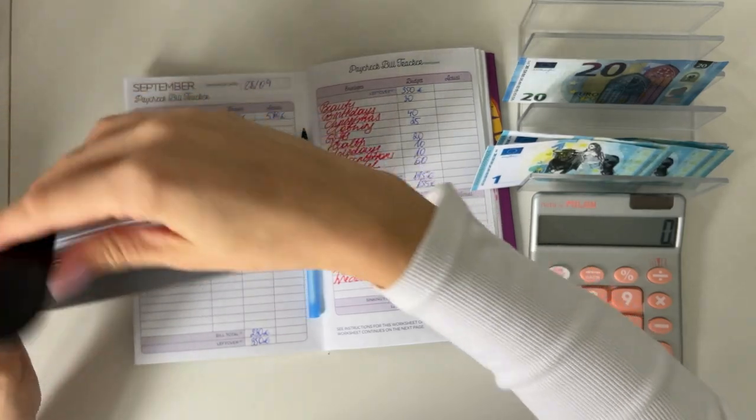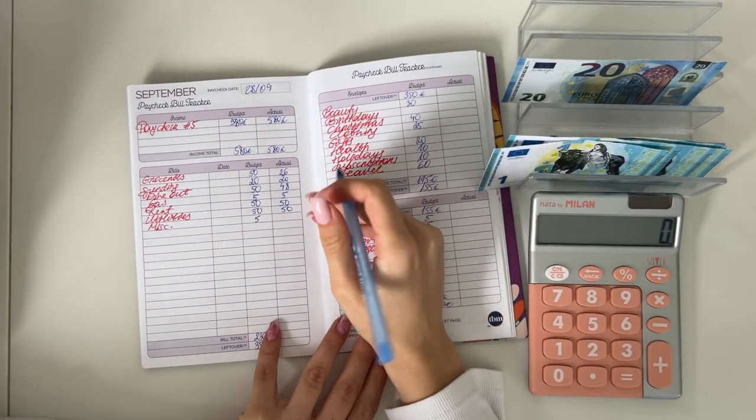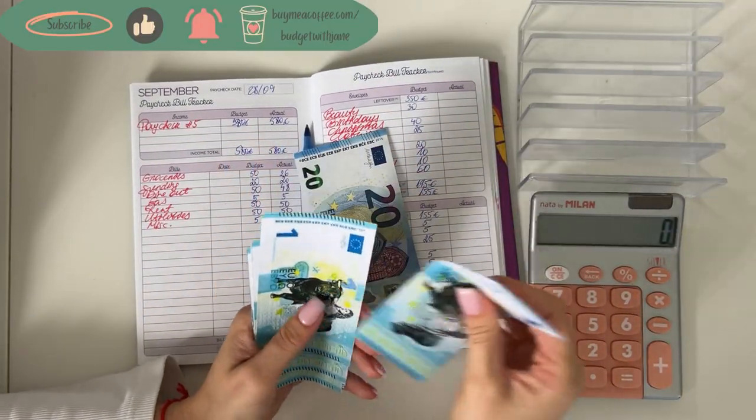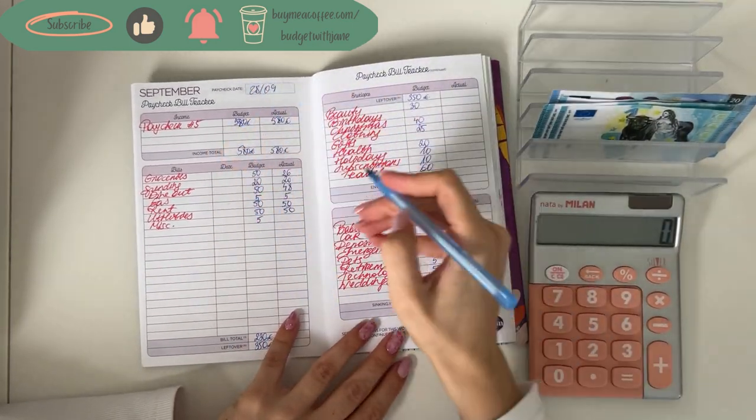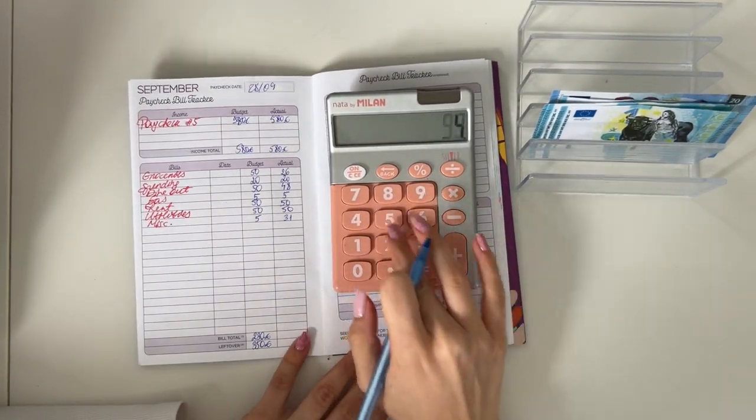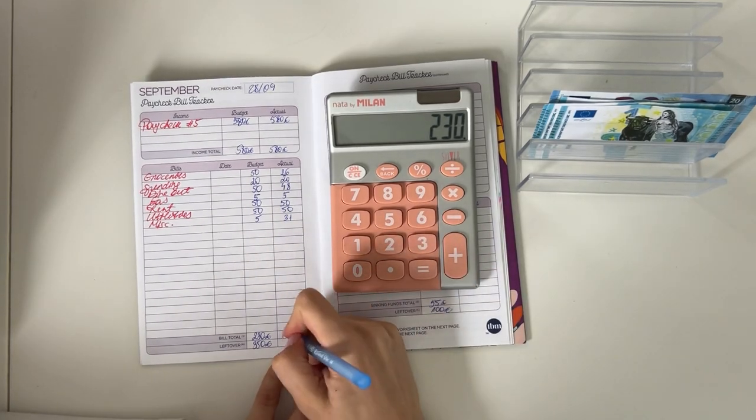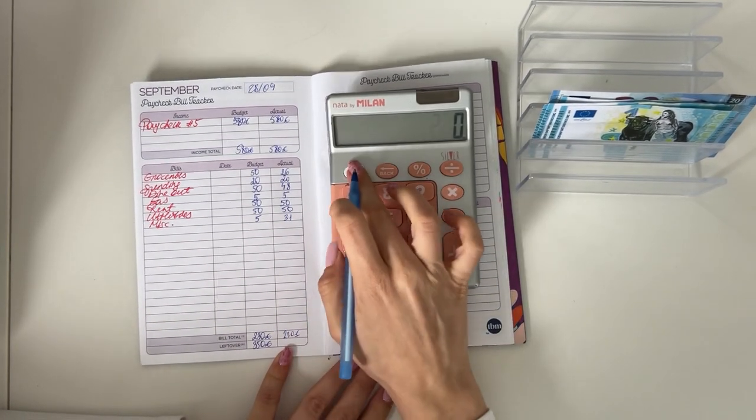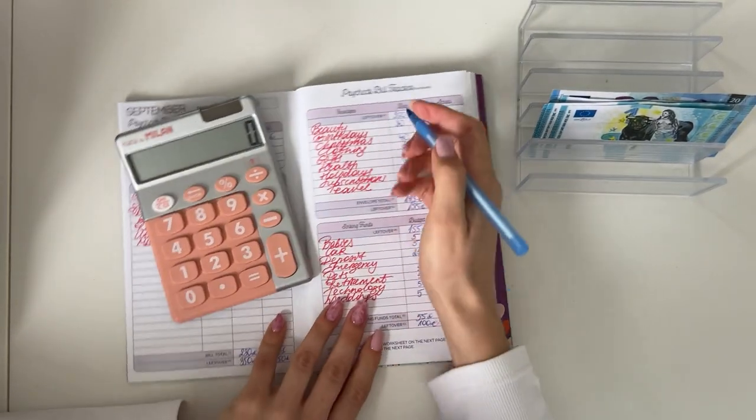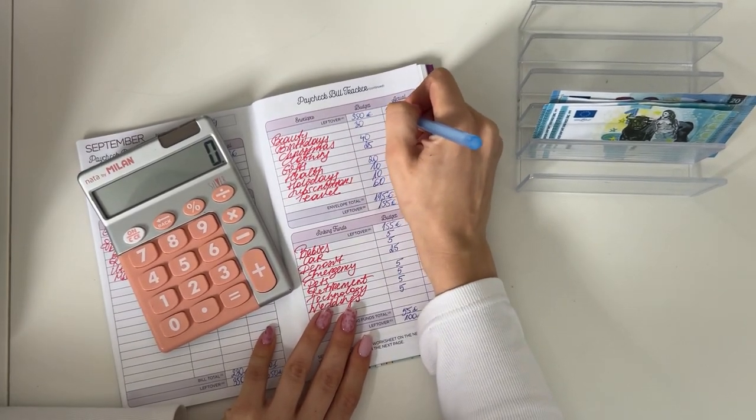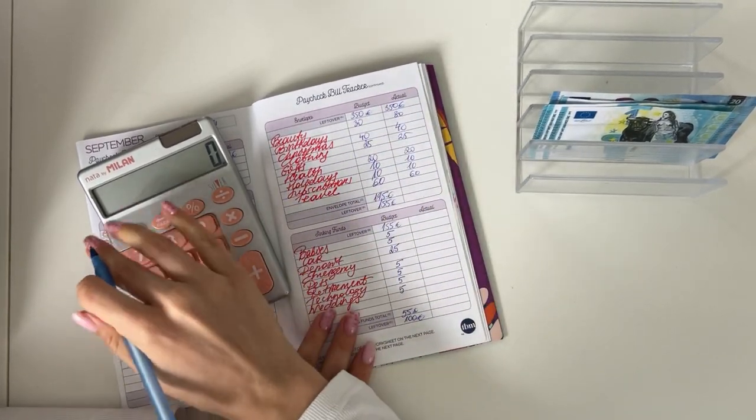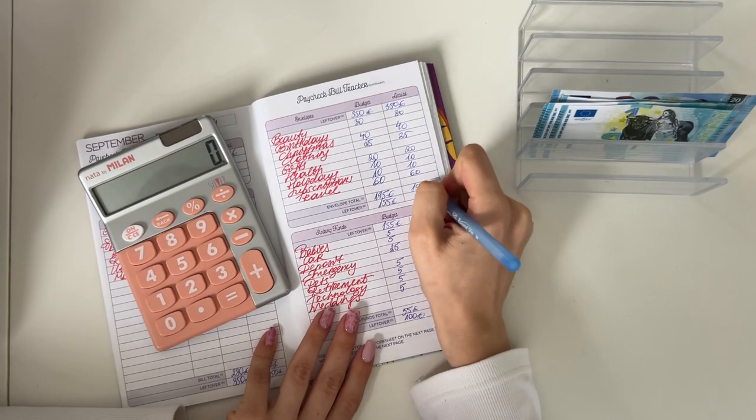Dine out has a rollover of 2. Miscellaneous got 5 and today we're adding 26 in miscellaneous, so that's 31 in total. So 26 plus 20 plus 48 plus 5 plus 50 plus 50 plus 31 is 230. All of the amounts stay the same minus 230, which leaves 350.